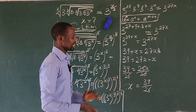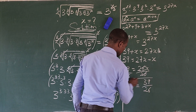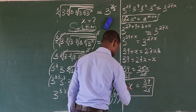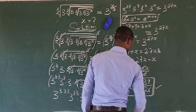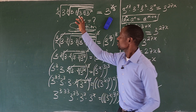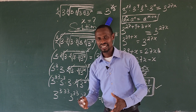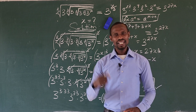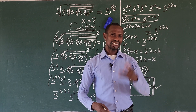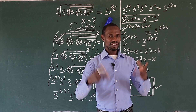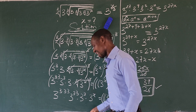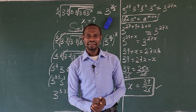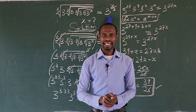Therefore, x equals 39 over 26 — that is the value of x that satisfies the original equation. Now, if we substitute this back into the original equation, will it be a valid solution or an extraneous one? I leave that to you — do the substitution and tell us in the comment section. I've done it already and I'll meet you there. See you then, bye — keep winning!